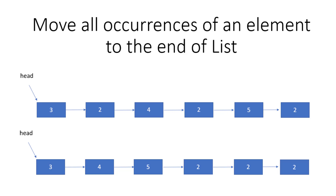Hey guys, welcome to Coding Simplified. We are solving a new question in linked list. We are given a linked list and we need to move all occurrences of an element to the end of the list. In this case, we have a linked list and we need to move all the occurrences of 2 to the end — so all the twos appear at the last of the linked list.